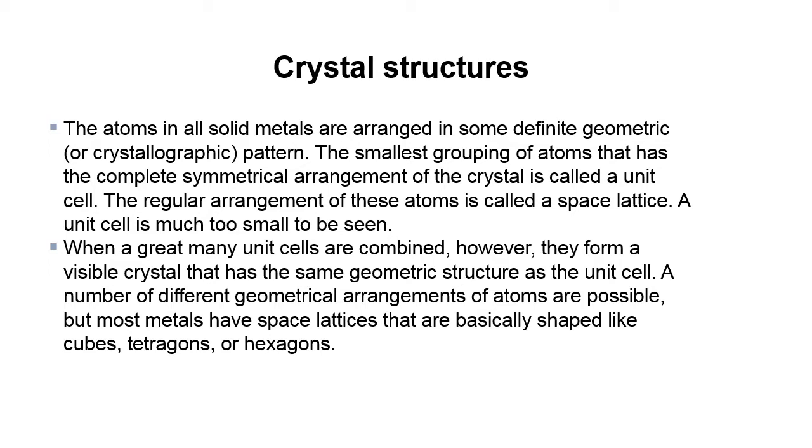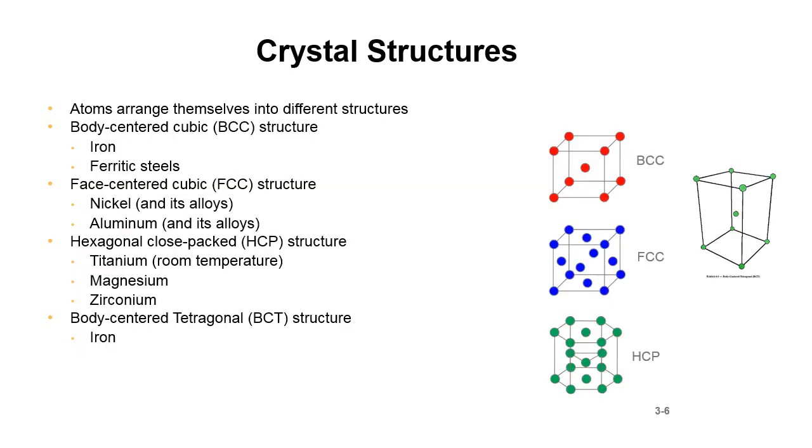The regular arrangement of these atoms is called a space lattice. A unit cell is much too small to be seen. When a great many unit cells are combined, however, they form a visible crystal that has the same geometric structure as the unit cell. A number of different geometrical arrangements of atoms are possible, but most metals have a space lattice that are basically shaped like cubes, tetragons, or hexagons.